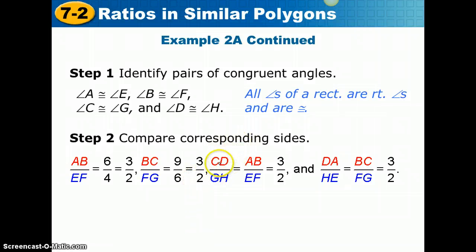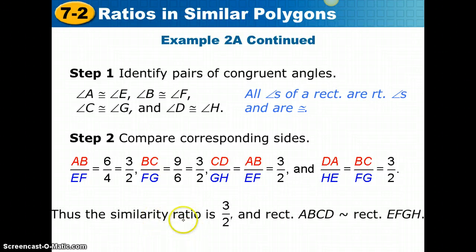Because they're rectangles, opposite sides are also congruent, so CD and GH would have that same ratio, as do the other sides. Since corresponding sides are proportional, they all have the same equal ratios. We can say the similarity ratio is 3 to 2, and rectangle ABCD is similar to rectangle EFGH. This sentence needs to be written in your notes.